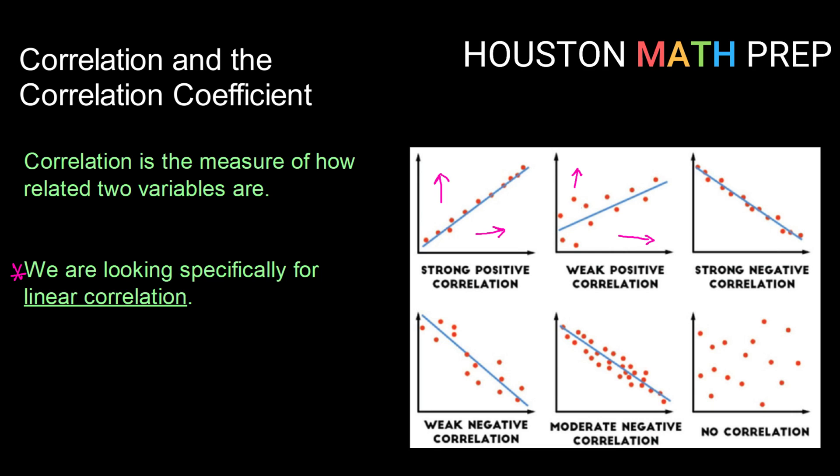Of course, we can also have negative correlation where as one variable increases, the other variable decreases. And in this case, in this one we're looking at here in the top corner, that one would be a pretty strong negative correlation. Our data values are clustered around the line.